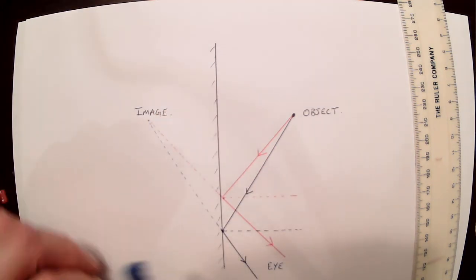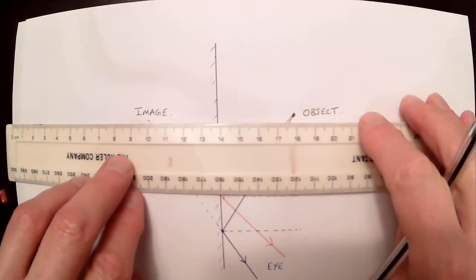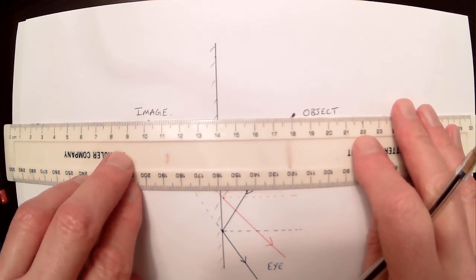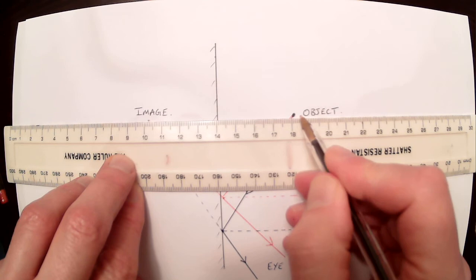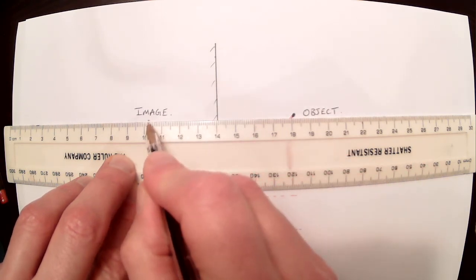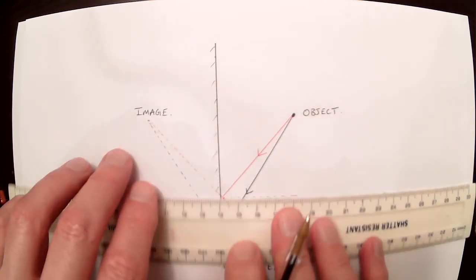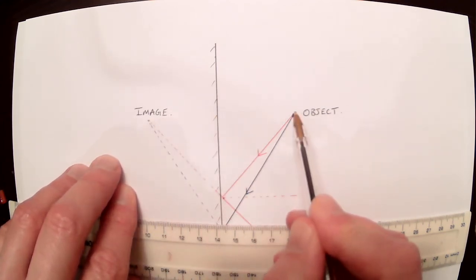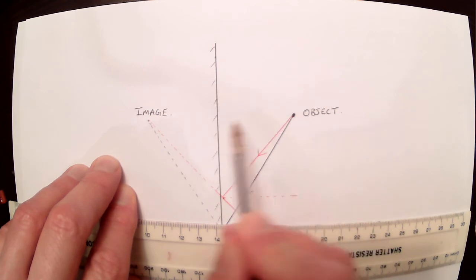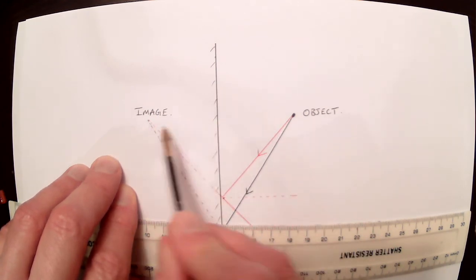So whereabouts is the image? Well, if we measure it, we'll see that the object in this case is 4 cm on that side of the mirror. And the image is 4 cm on this side. So the image is the same distance behind the mirror as the object is in front of it. In this case, 4 cm there, 4 cm there.